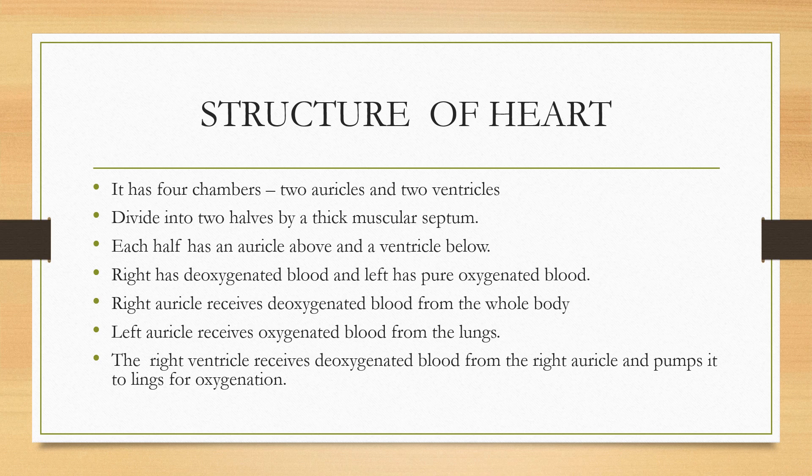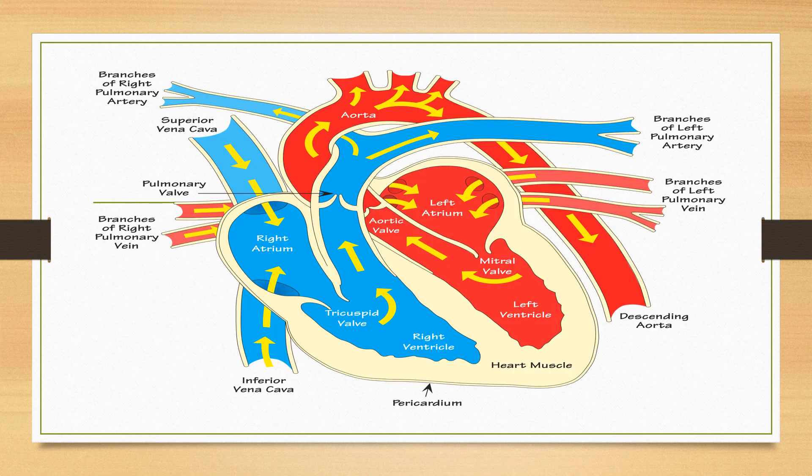The ventricles are the distributing chambers of the heart. Their walls are thick. The right ventricle receives deoxygenated blood from the right auricle and pumps it to the lungs for oxygenation. Have a look at the picture to understand the structure of the heart in a better way.